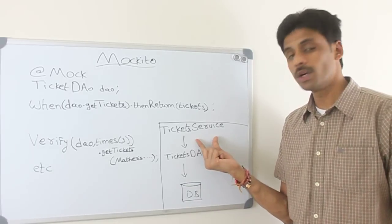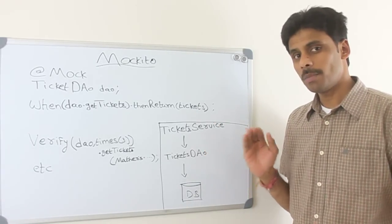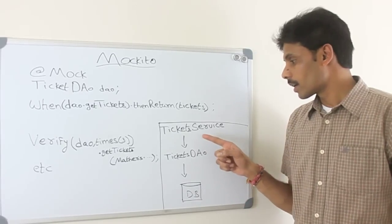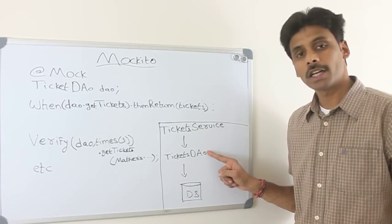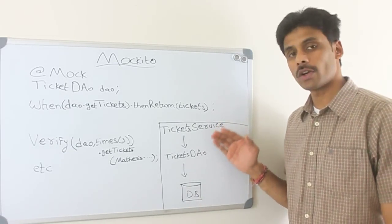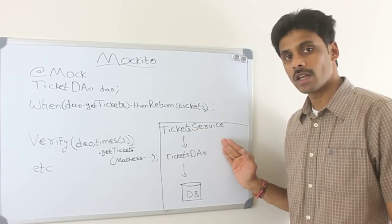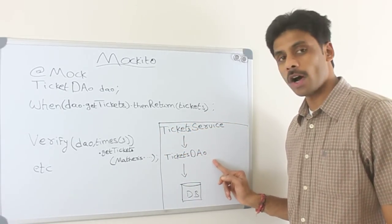Now, if you are writing a unit test for your ticketing service around your business logic, that particular unit test should not make this class call into the ticketing DAO, connect to the database and all that. We need not worry about the database connection because we are only testing this piece here, the ticketing service. And we need to mock this layer.